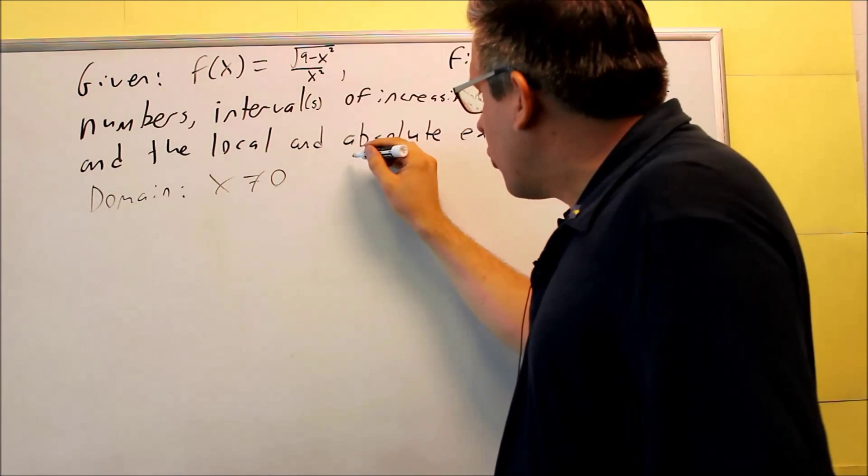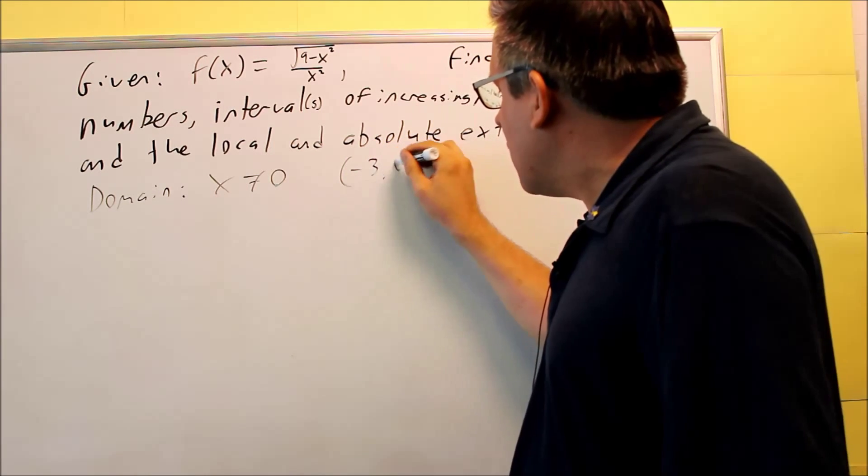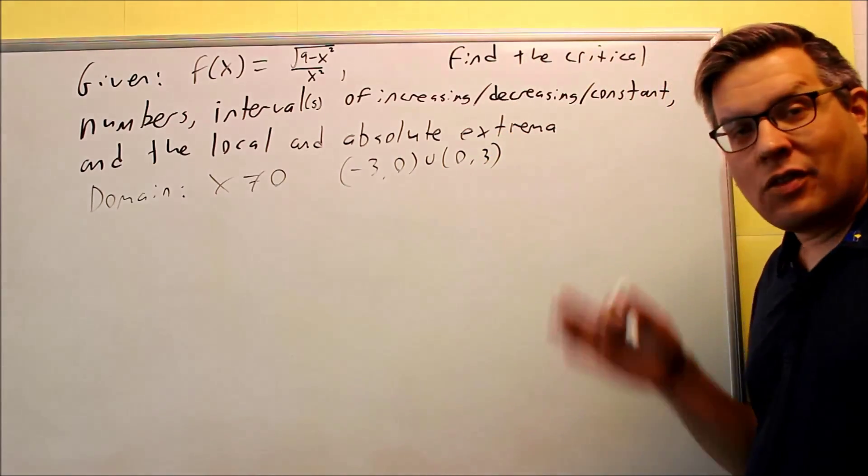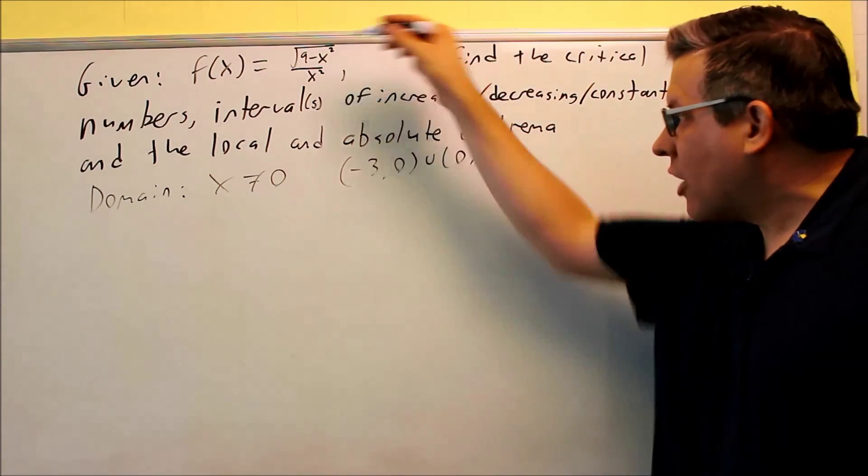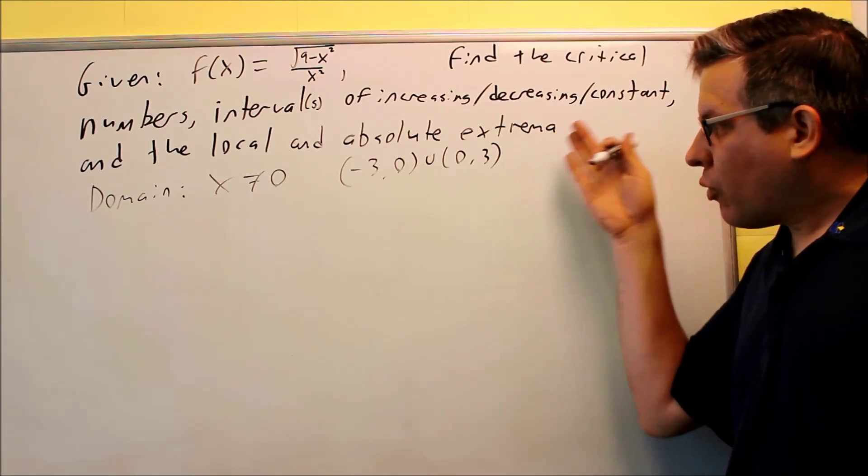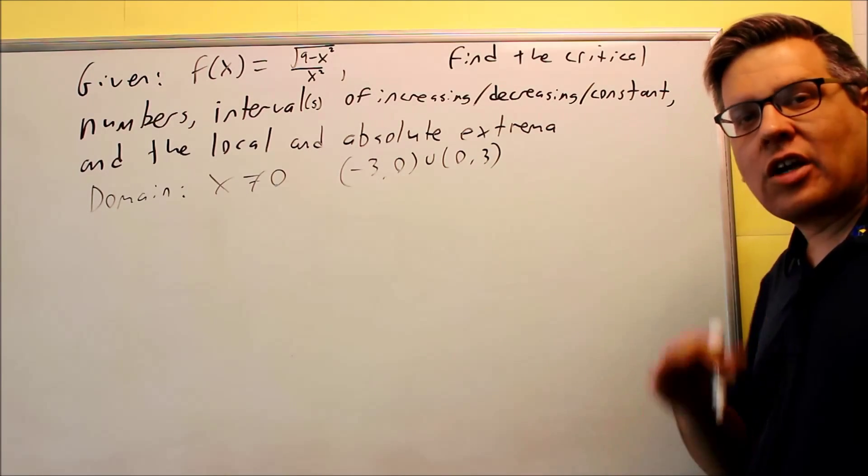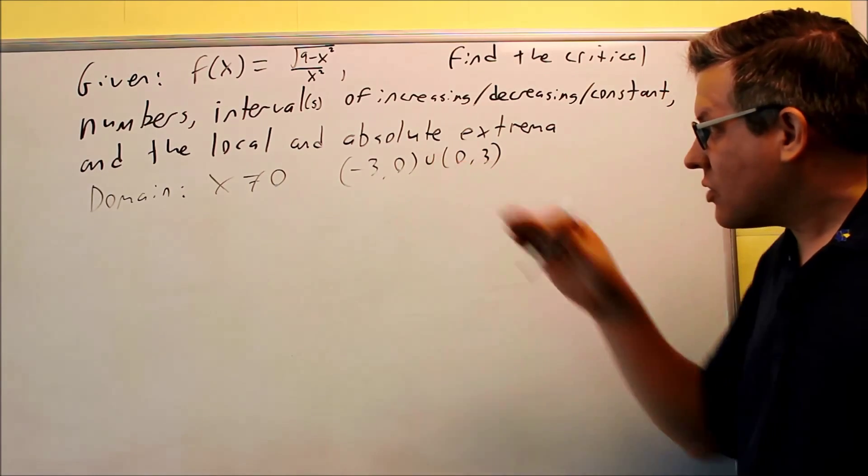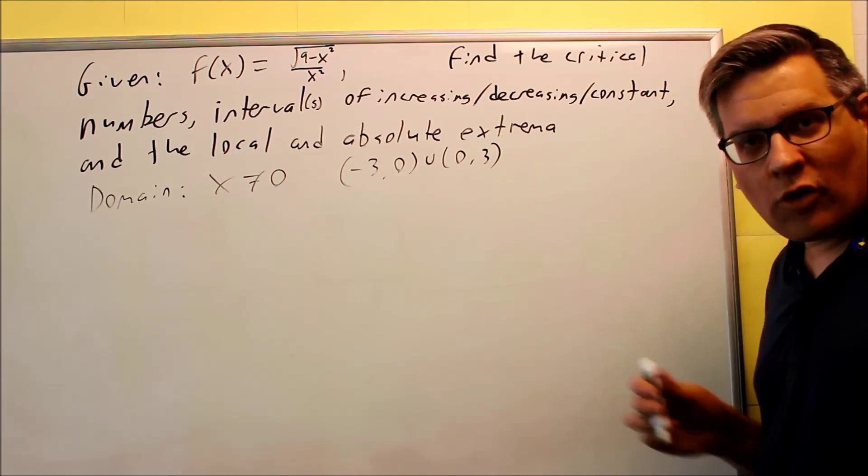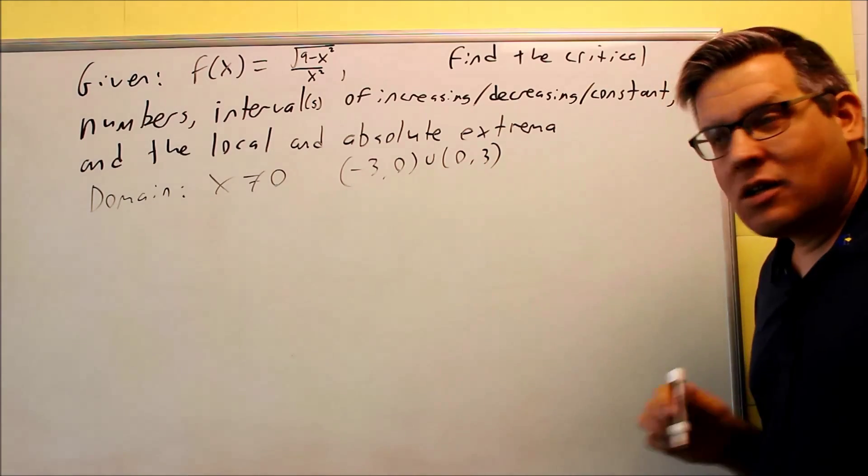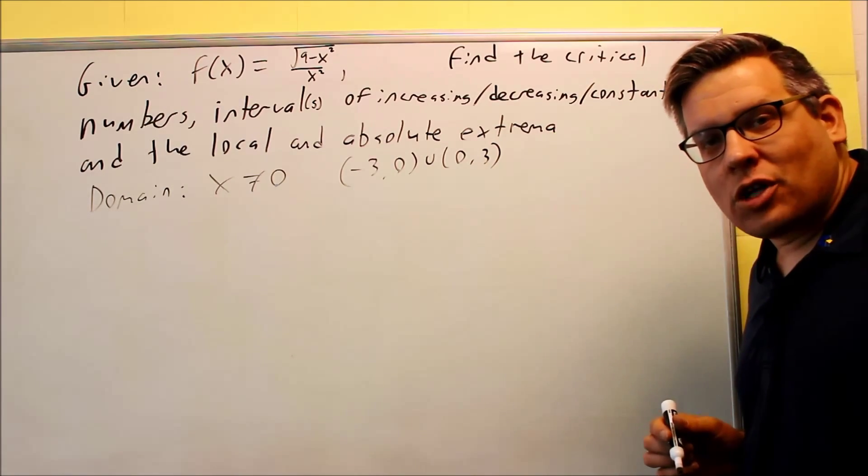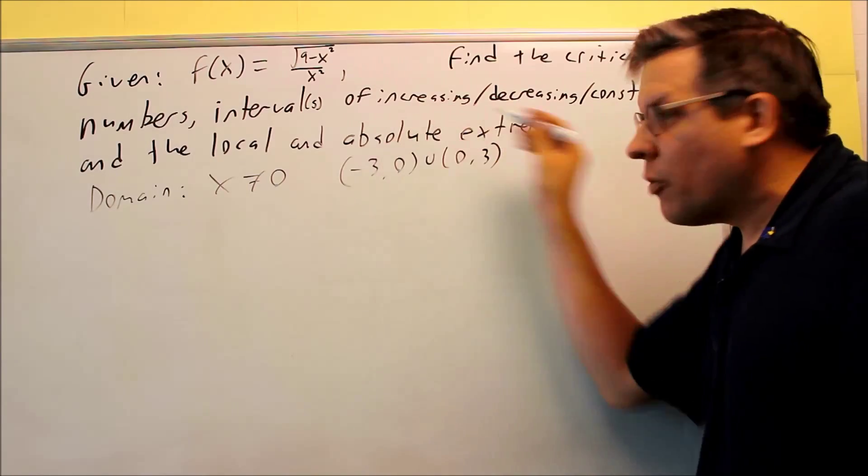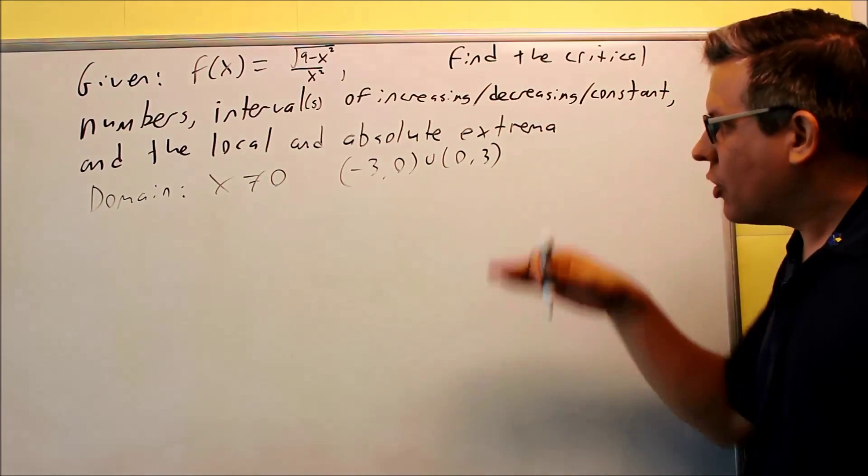So here is my domain, I'm going to write in interval notation, negative 3 to 0, and then from 0 to 3. That's it. These are the only numbers you're allowed to put inside here. So I want to watch out for this as I'm going through. If I get a critical number of 0, first of all, I know it can't be a critical number because 0 is not included in my domain. Or if I get anything outside of that, then I know that it can't be a critical number either. So it's always good for problems with square roots to do the domain first. That way we can look back at it later.